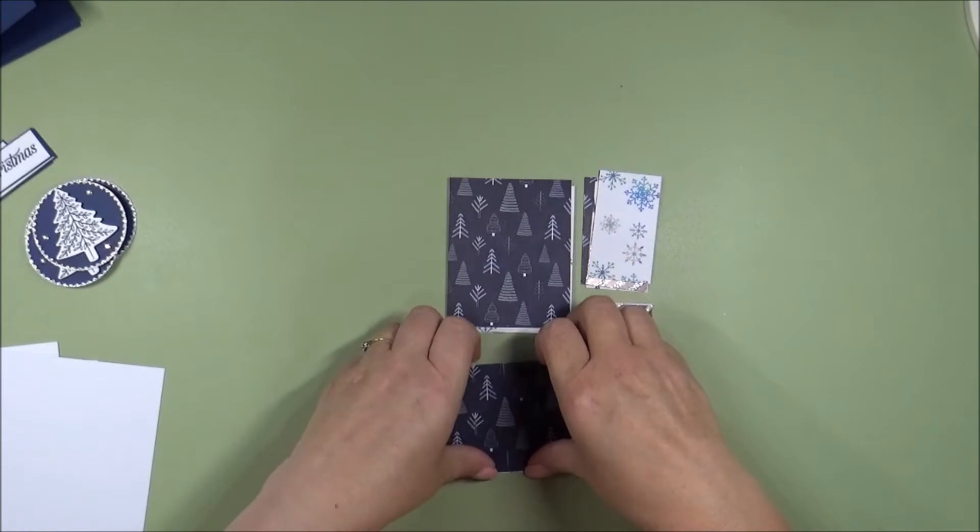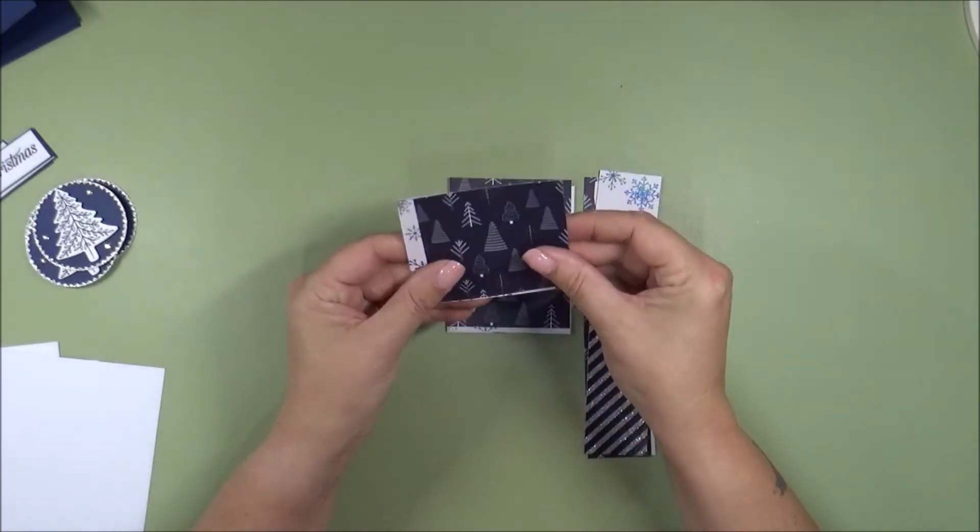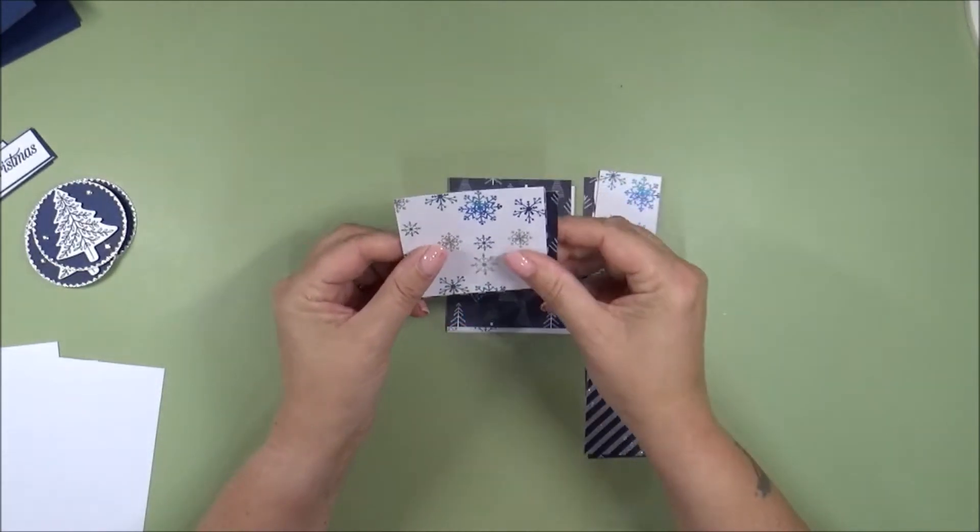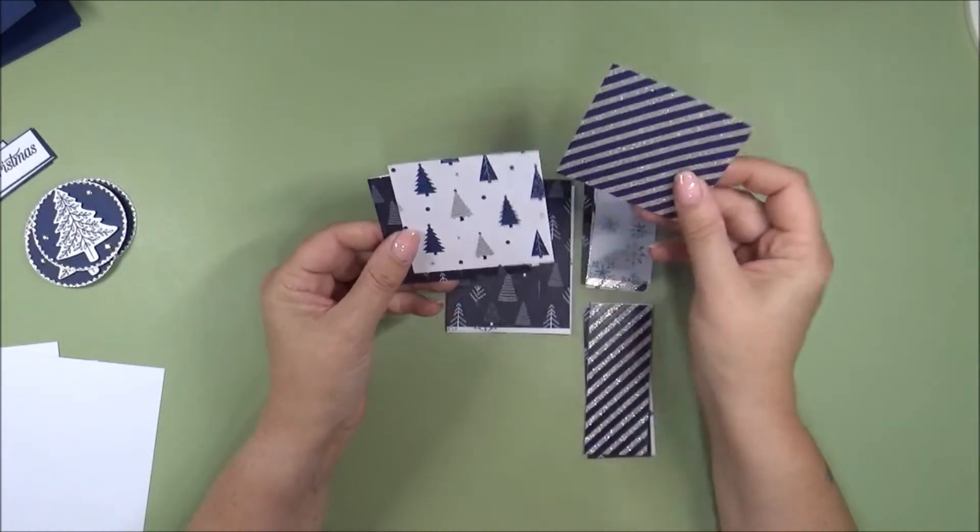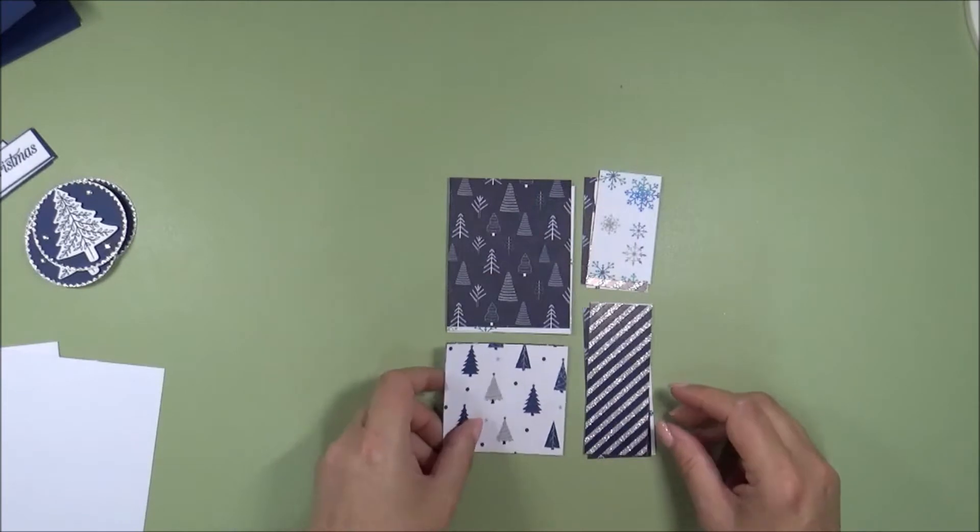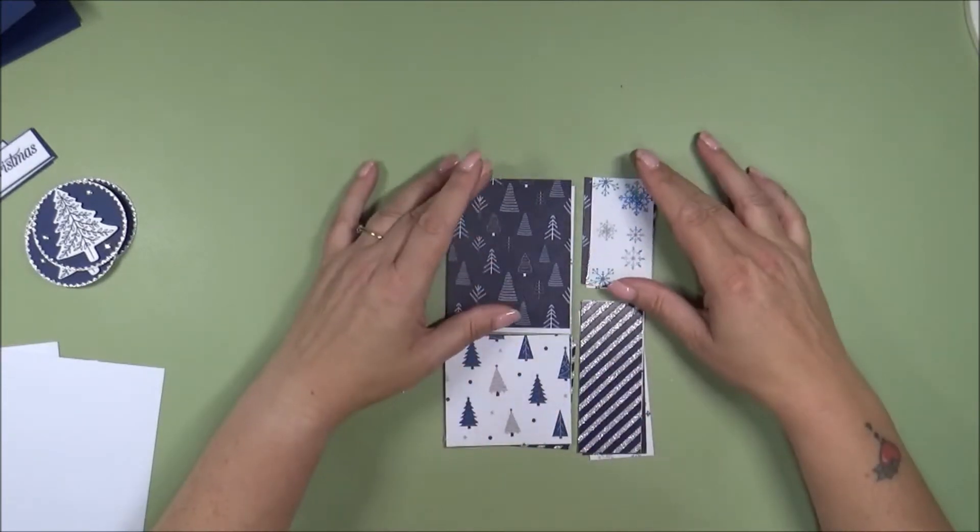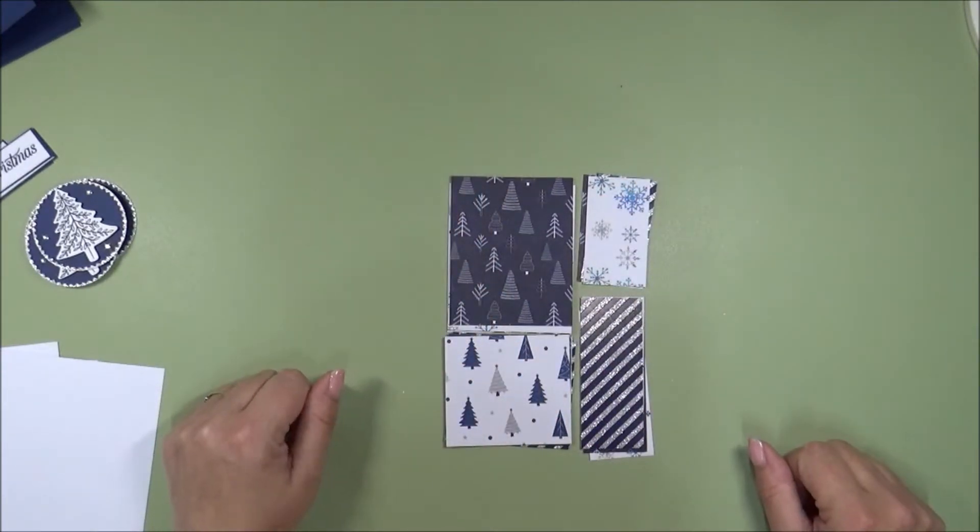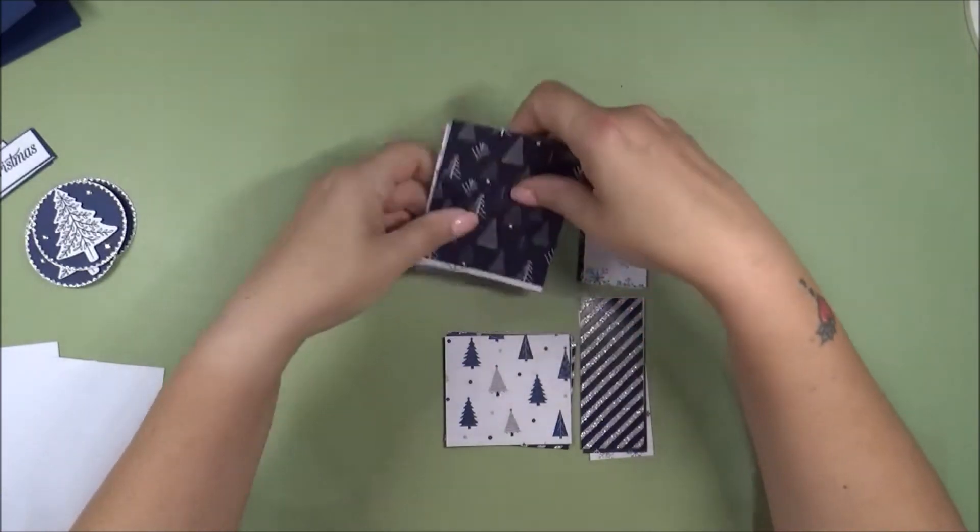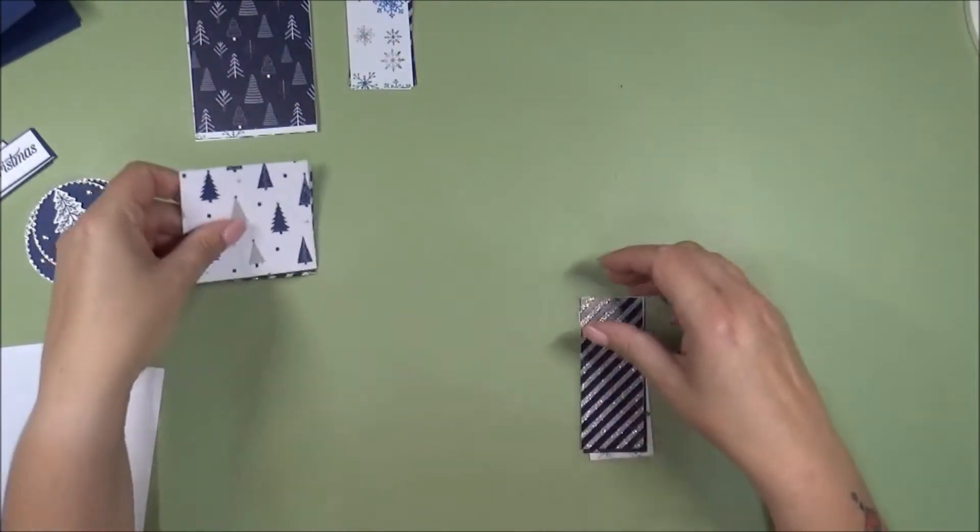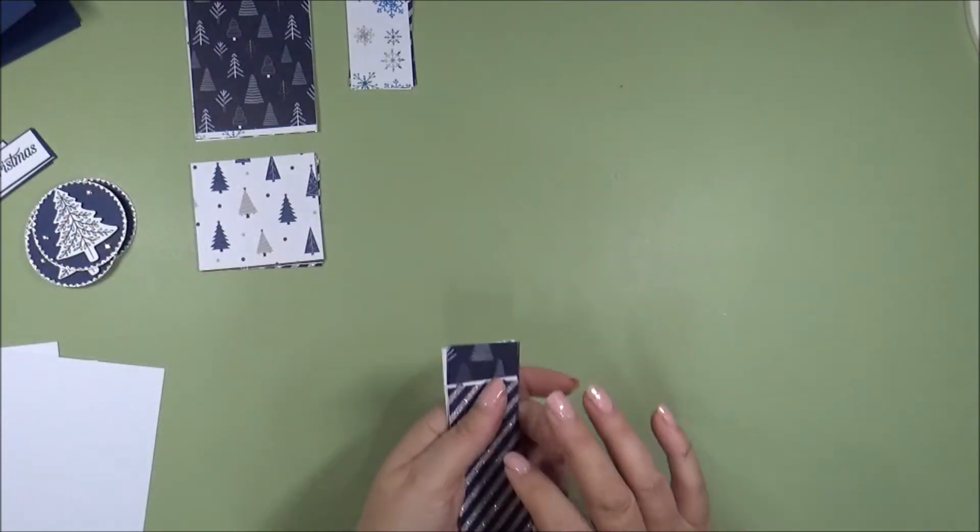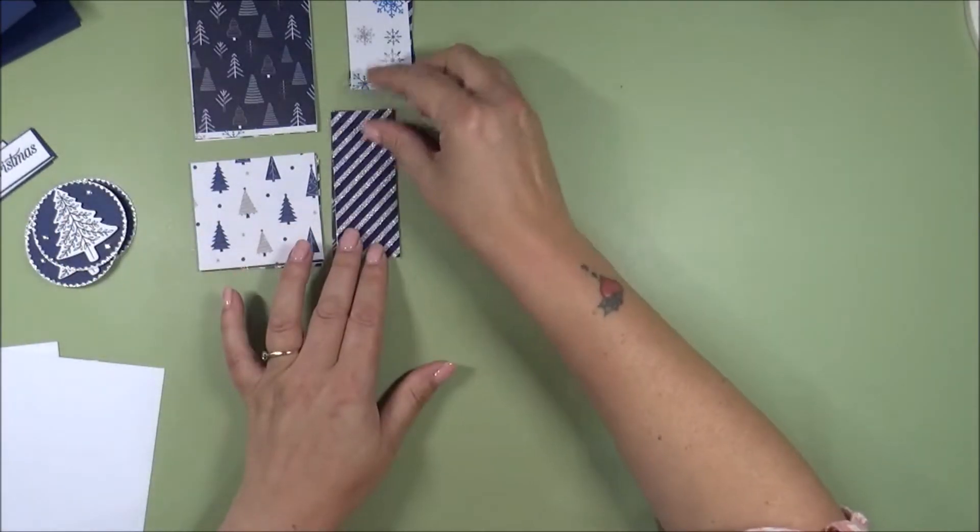And then grab this pile, and take the top one, put it underneath, the second one, put it underneath, and the third one, and put it underneath like that. So then you'll have all different pieces. So then just move those to the side, making sure you don't shuffle them as you do it.